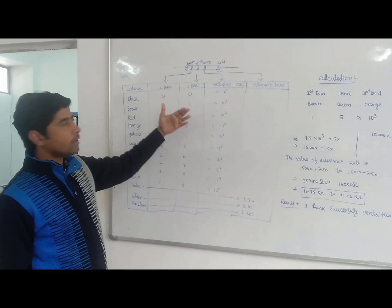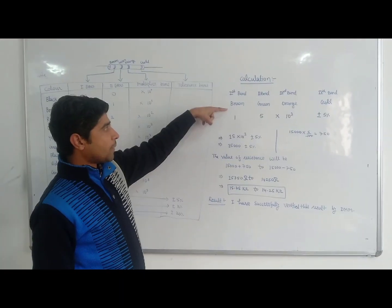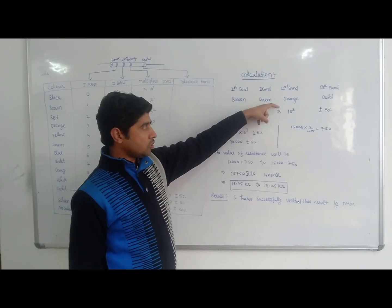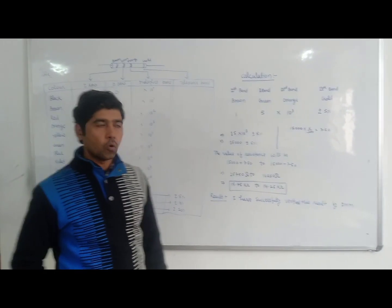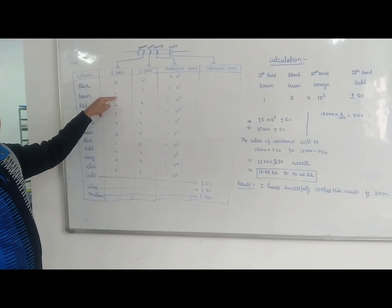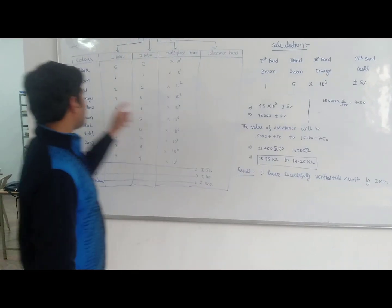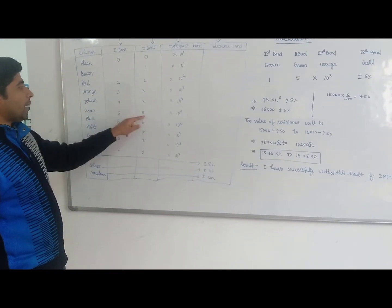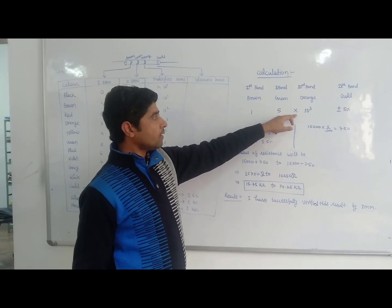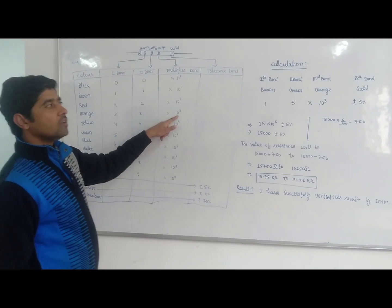How can we find the value of this resistor? First band is brown — value is 1. Second band is green — value is 5. Third band is orange — which is the multiplier band — orange corresponds to 10 to the power 3.